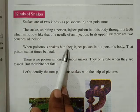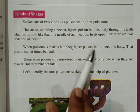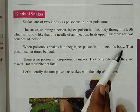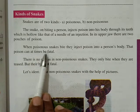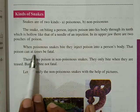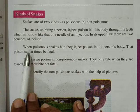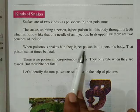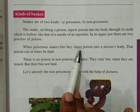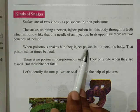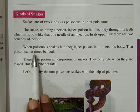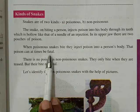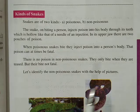When a poisonous snake bites, they inject poison into a person's body. That poison can at times be fatal. Jab woh bite karta hai — poisonous snake — toh woh inject kar deta hai poison ko, aur jo kai baar kisi bhi vyakti ke marne ka karan bhi ban jata hai.